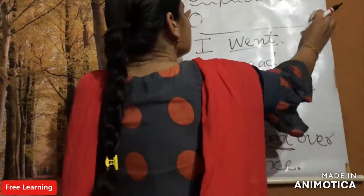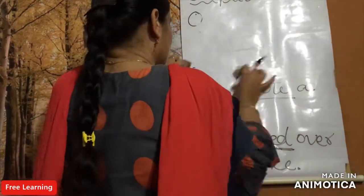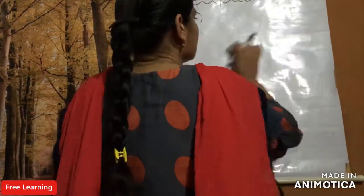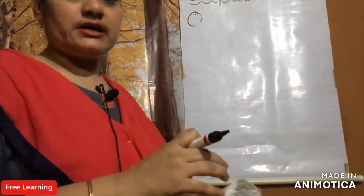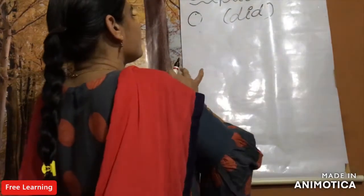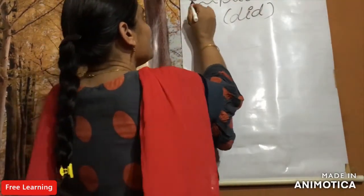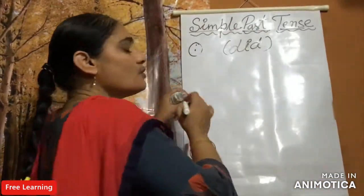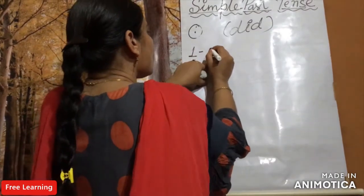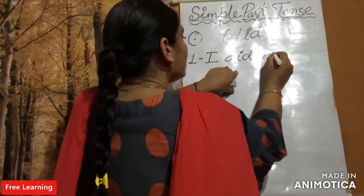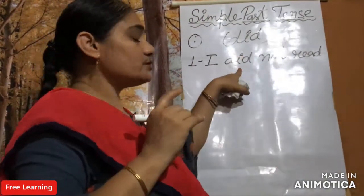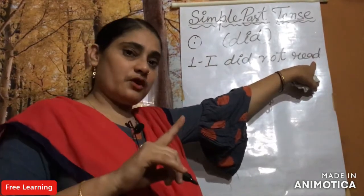Now let's move towards the second type of sentence in simple past tense — the negative sentence. For negative and interrogative sentences, we need the helping verb. The helping verb is 'did'. When we use the helping verb 'did', the main verb will change back to its first form, not the second form.